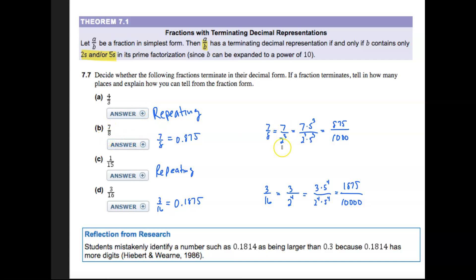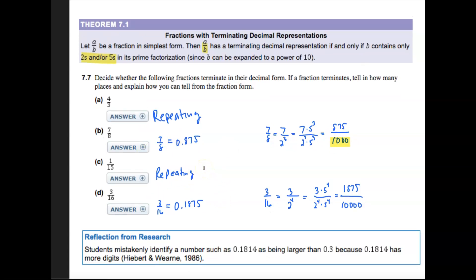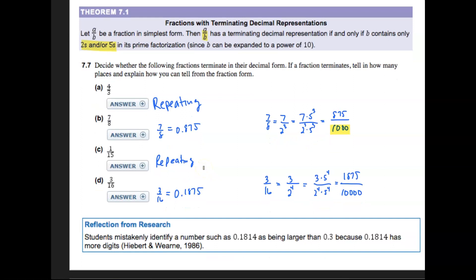7 over 8 is 7 over 2 cubed. And you can see that since there's only a 2 in the denominator, it will be a terminating decimal. What is its decimal? I'll convert that into a base of 10 in the denominator, and you will see you end up with 0.875. You can also check this with your calculator, but I want you to understand what makes these terminating or non-terminating or repeating.